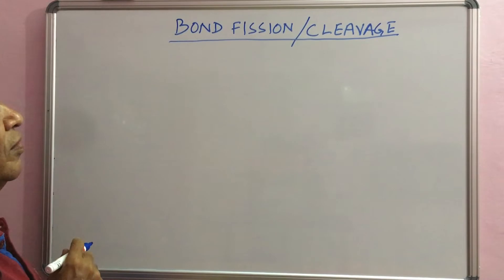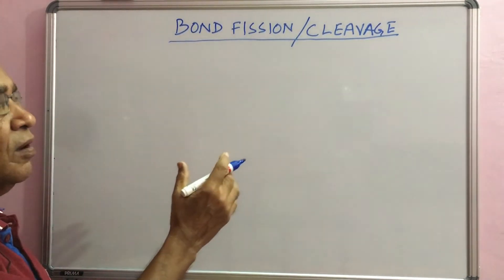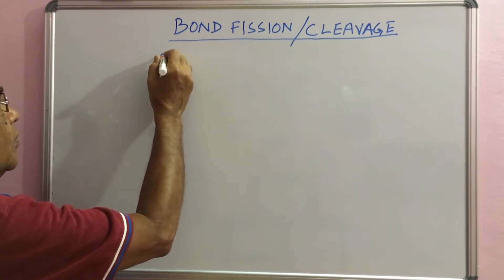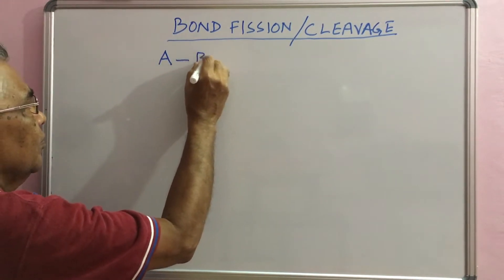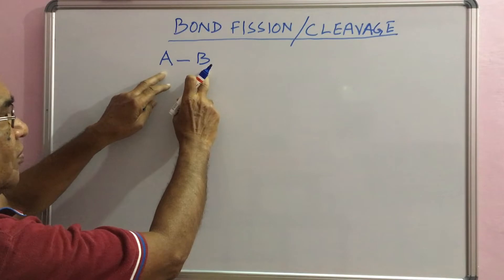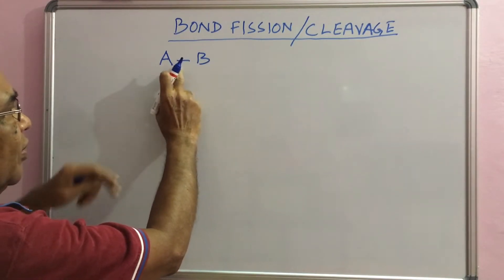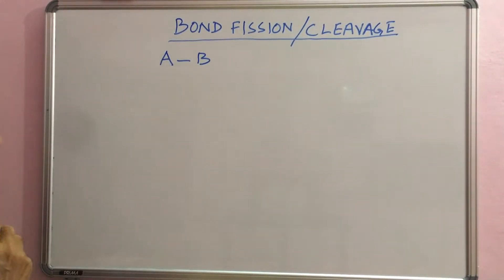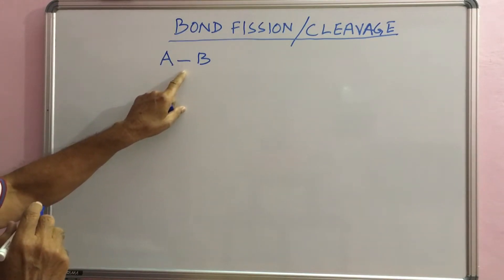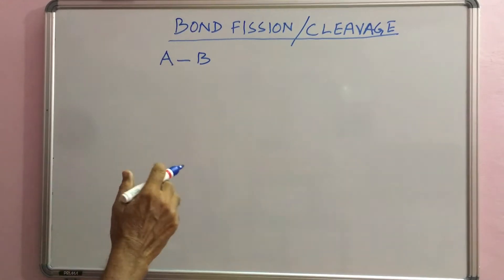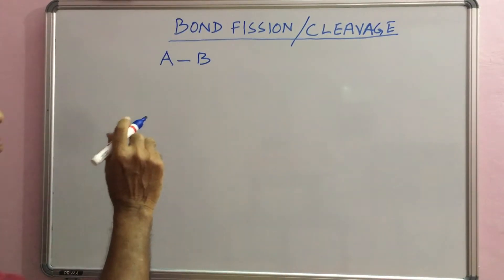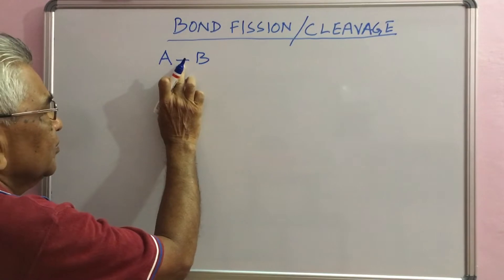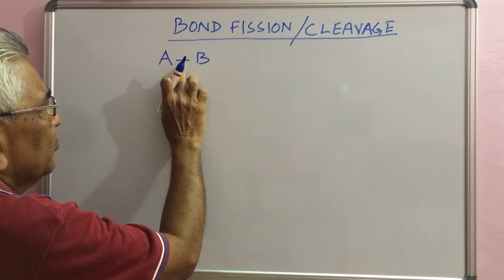We will discuss today covalent bond fission or cleavage. Let us take a molecule AB. These two atoms or groups are joined by a covalent bond, which consists of two electrons. This can be cleaved under appropriate reaction conditions, thereby splitting of this bond takes place. It may be of two types.